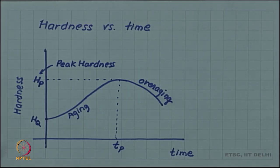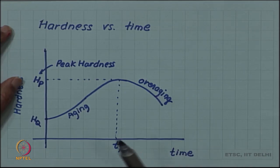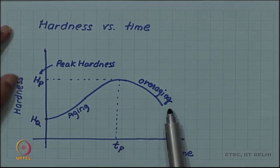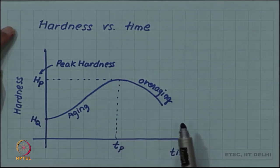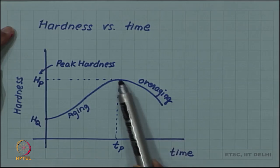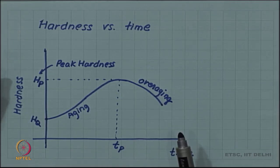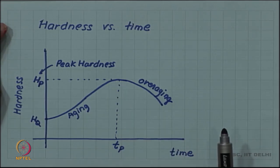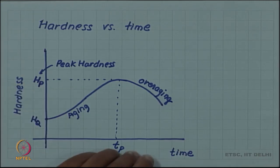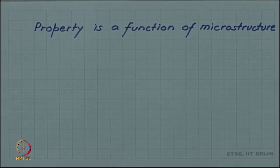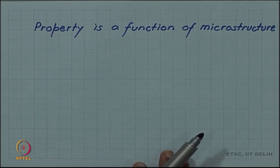I sometime like asking questions to students that why does hardness decrease after attaining its peak hardness during over aging. What is the reason for this decrease? I once got a very interesting answer that since by definition the peak hardness is the maximum hardness, hardness has to decrease after the peak. Well, let us try to see what really is the reason for hardness decrease.